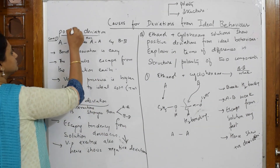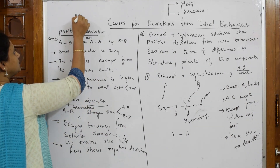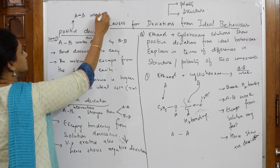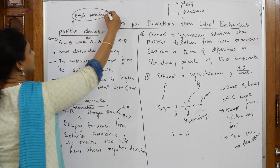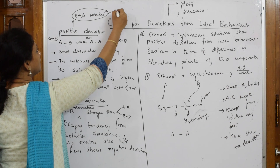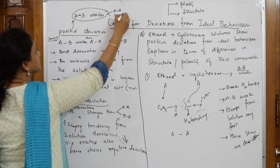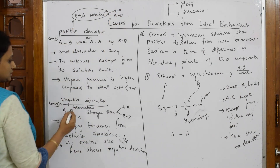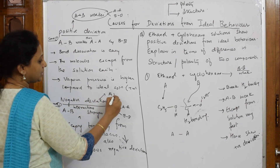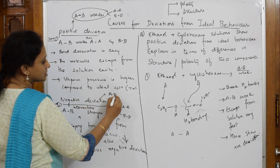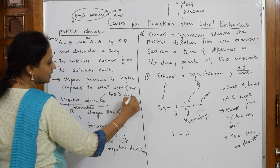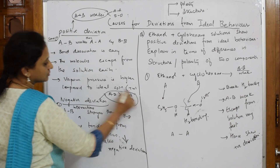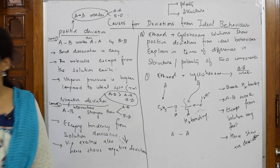To summarize: for positive deviation, A-B is weaker than A-A and B-B. For negative deviation, A-B is stronger than A-A and B-B — that is why it will not escape easily.